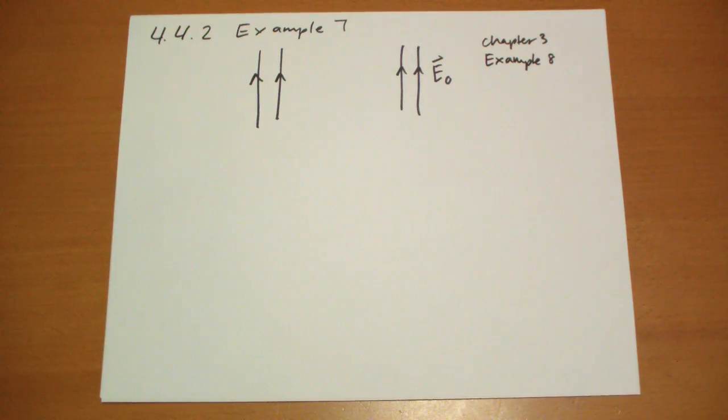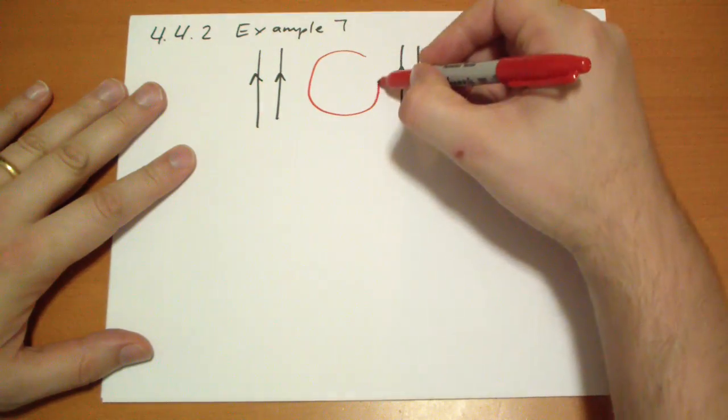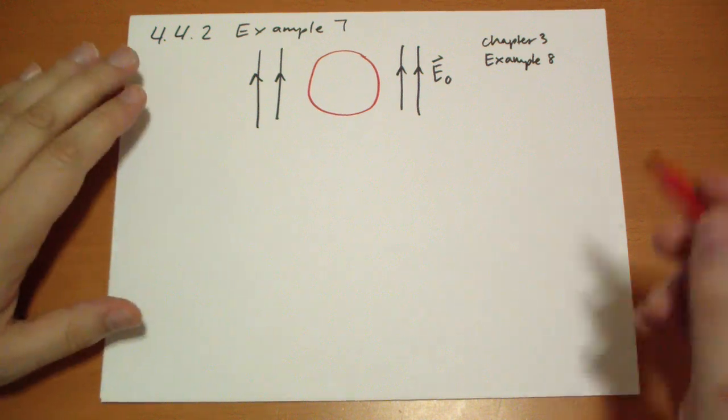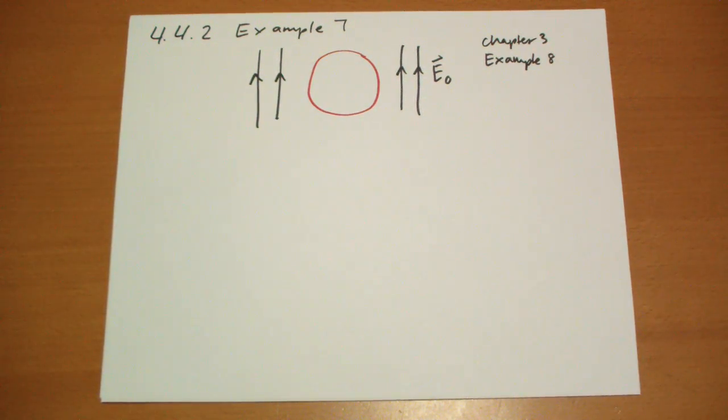We're bringing in a sphere, but this sphere isn't conducting. This sphere is actually a dielectric, a linear dielectric. And as you can probably guess, you're going to get some electric field going through this sphere.